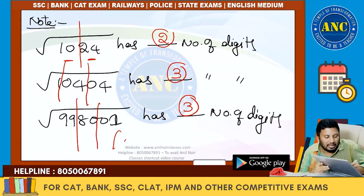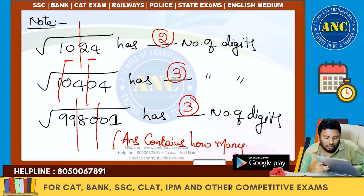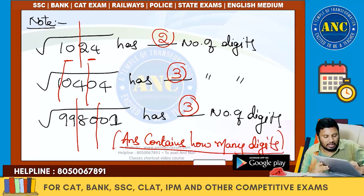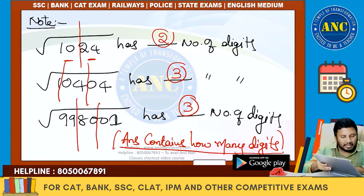The number of groups after keeping slashes tells you how many digits the answer contains. This method will tell you the answer contains how many digits. Idea is clear, right? Next concept — please write down.